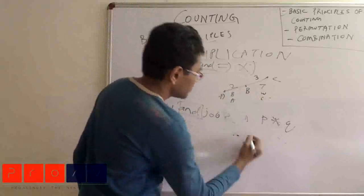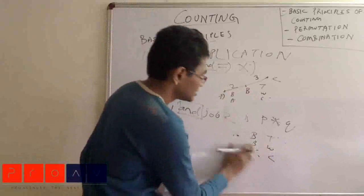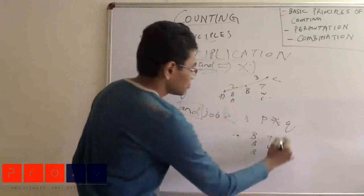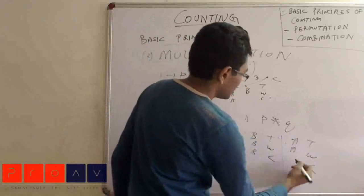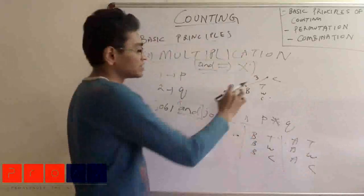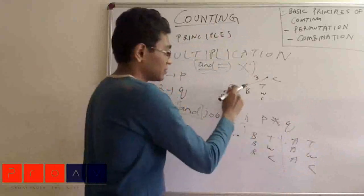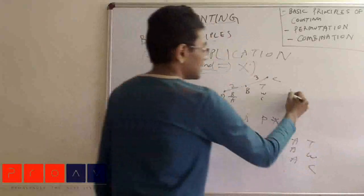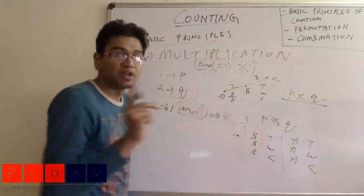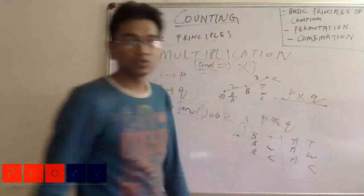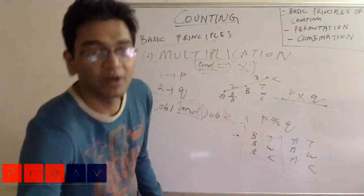If I go from A to B by bus, I have three options to go from B to C: by train, walking, or by cycle. Similarly if I go from A to B by auto, I again have three options from B to C. So total I have six options — three for each entry. If there are p entries going to B, and q options from B to C, total options will be p multiplied by q. One underlying condition is that the two events must be independent of each other.